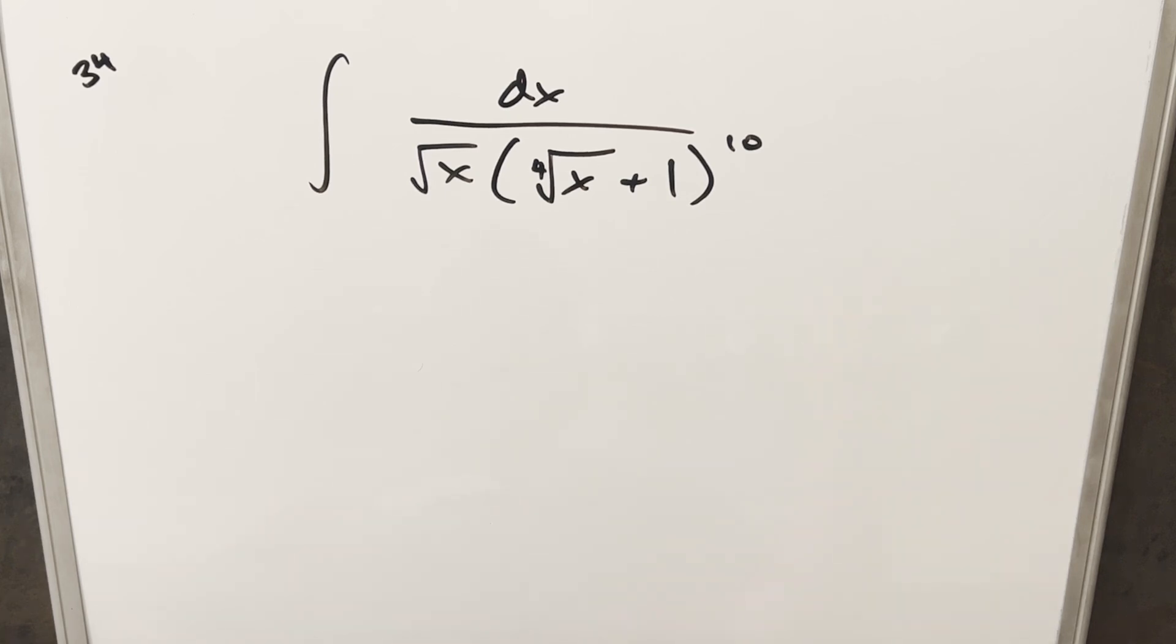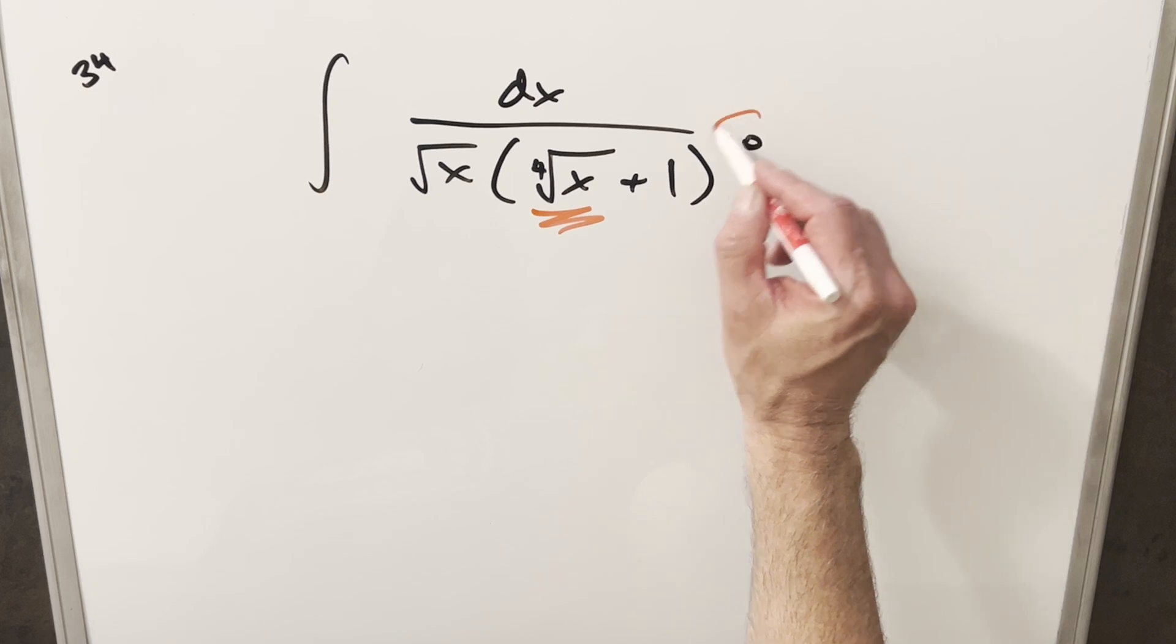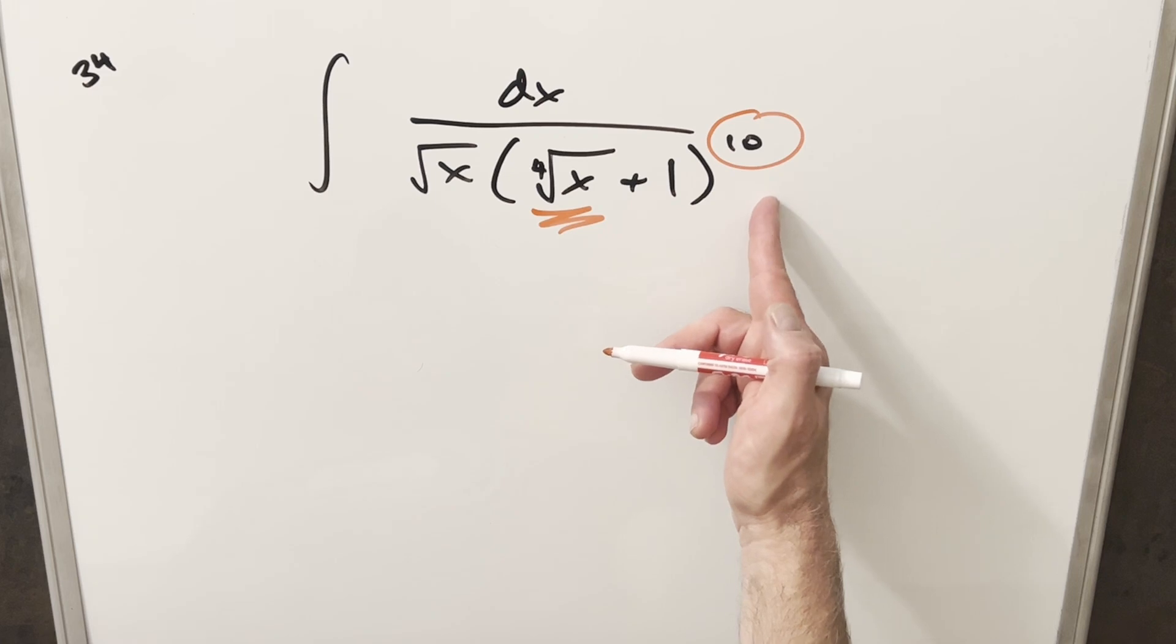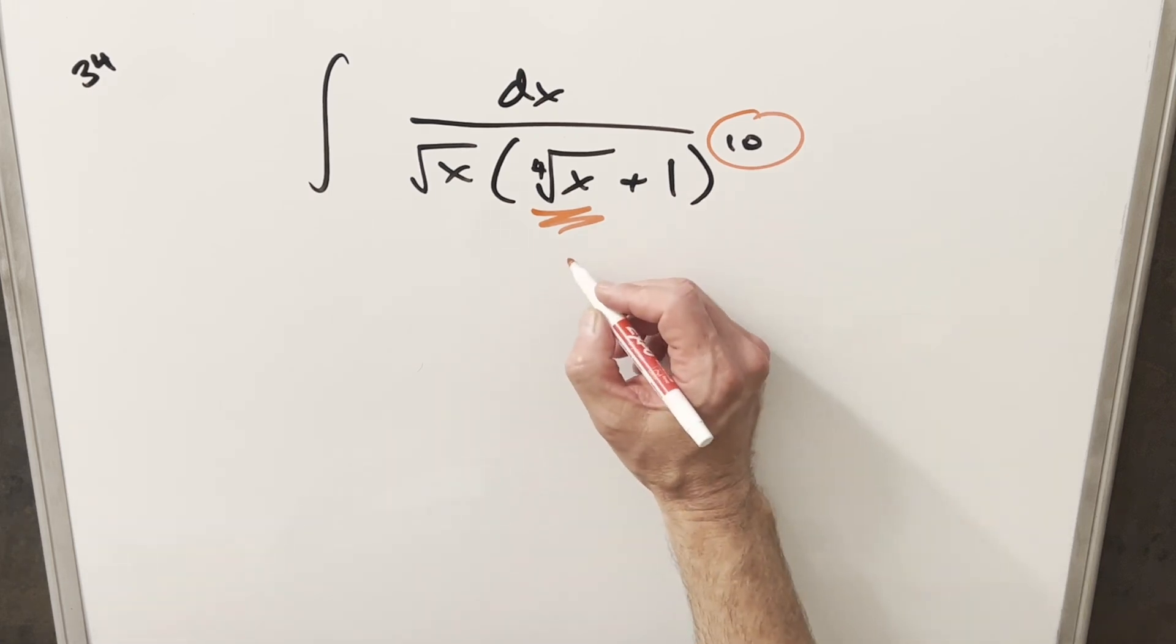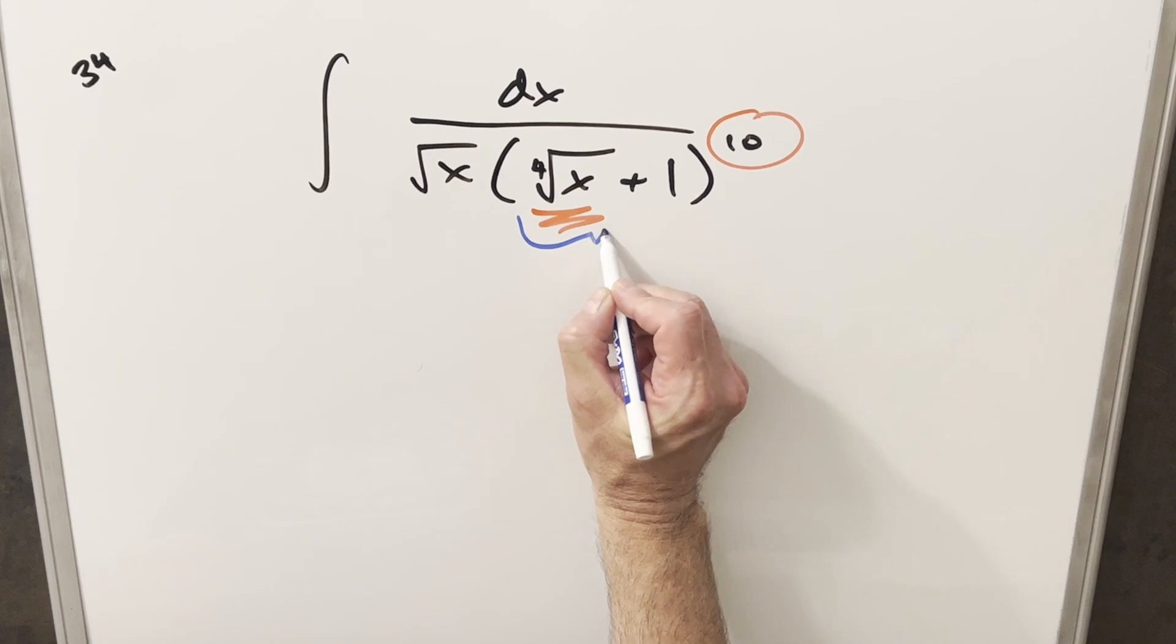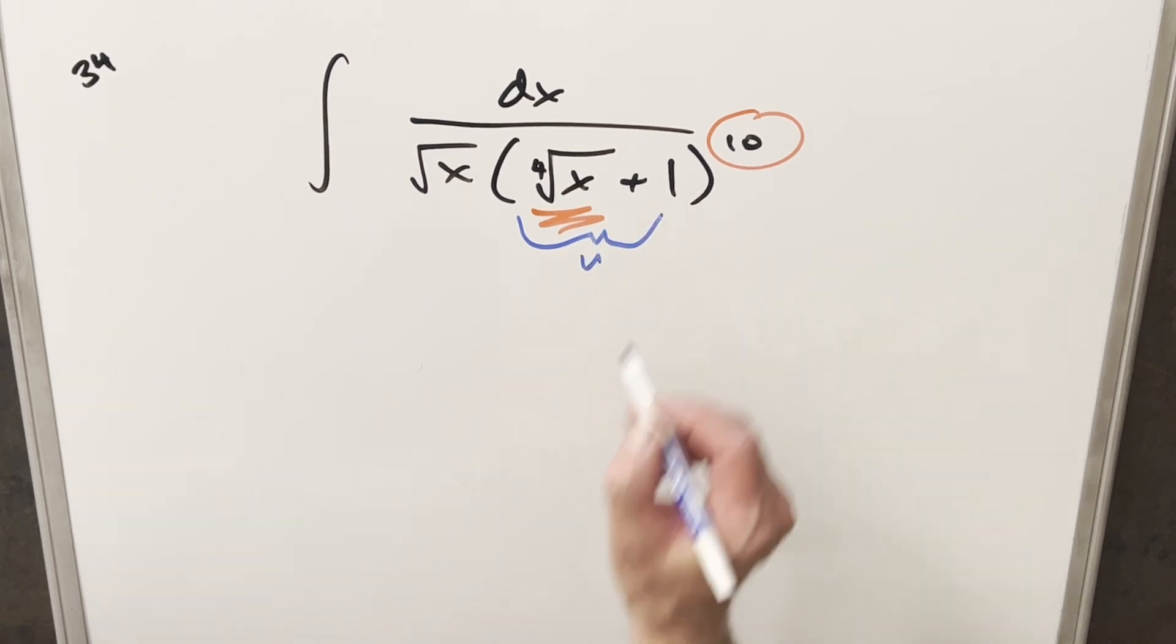Initially this seems kind of scary just because we've got a fourth root inside here and then we've got this to the 10th power. Initially I wanted to do a u substitution just for this, but then if we do that we have u plus 1 and it's still all to the 10th. I think what I want to do instead is make my u substitution for this whole thing to really substitute what's inside there. So let's just go ahead with that.